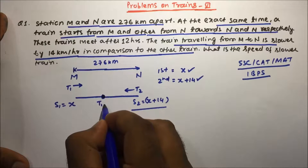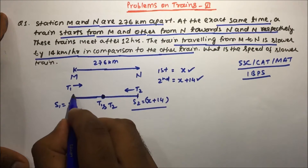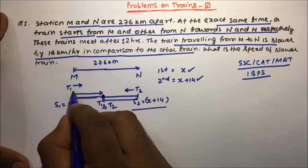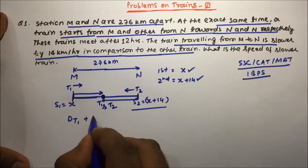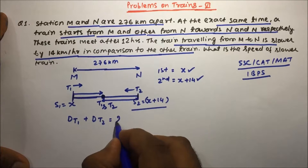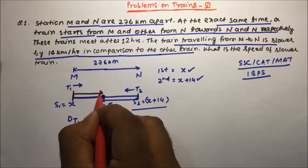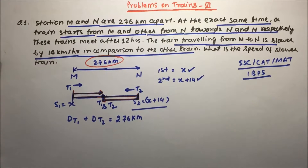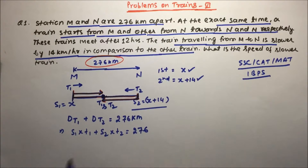Suppose both trains T1 and T2 meet at a point. The first train will cover a certain distance and the second train will cover the remaining distance. Together, distance covered by train 1 plus distance covered by train 2 equals 276 km, because when they meet they will have together covered the full 276 km.